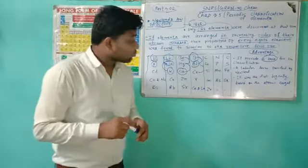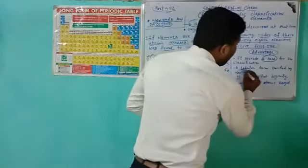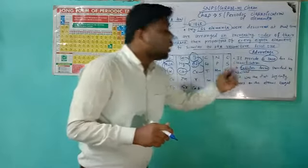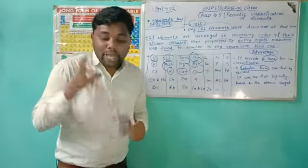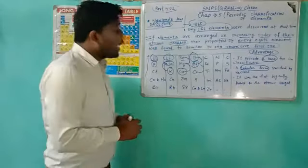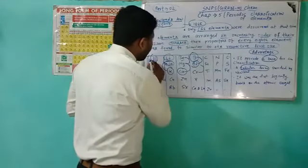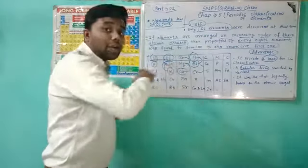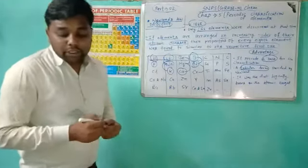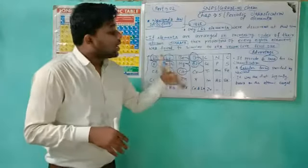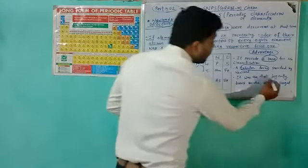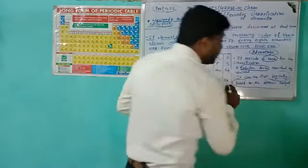The next advantage is that Newlands provided a tabular form — the arrangement of elements in tabular form was introduced by Newlands' Law. The horizontal lines are rows, so the concept of rows was given by Newlands. Another advantage is that this Law of Octaves was the first to be logically based on atomic weight. Before this, Dobereiner gave only triads, but Newlands actually gave the logical basis of atomic weight — why we take atomic weight as the key.